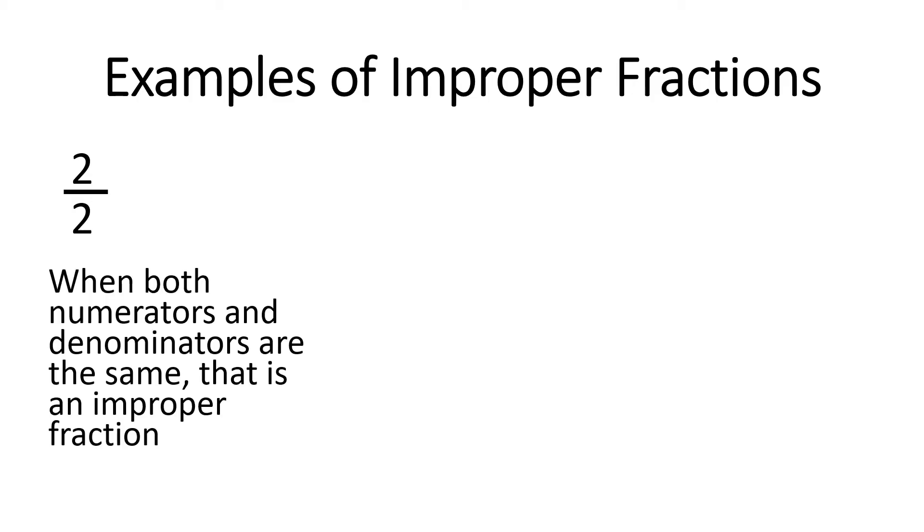Before we begin, we must look at some examples of improper fractions. So the first one will be 2 over 2. This is improper because when both numerators and denominators are the same, that is an improper fraction.